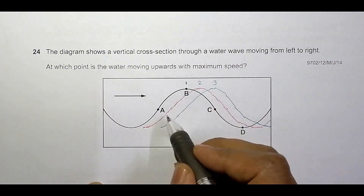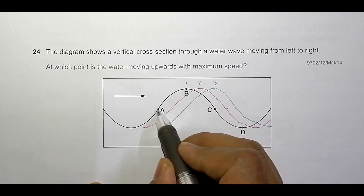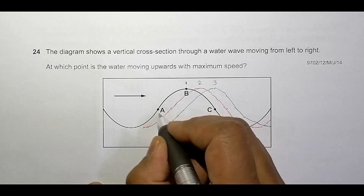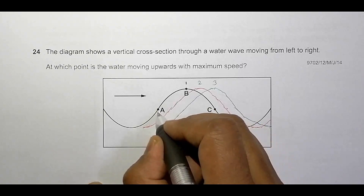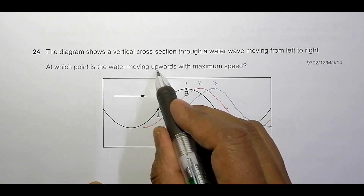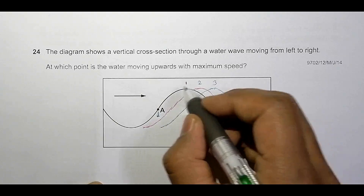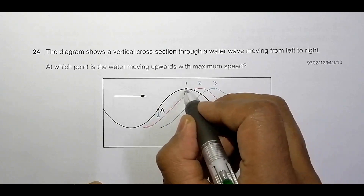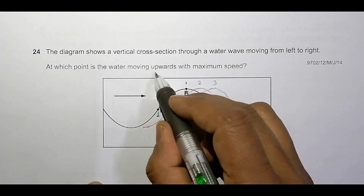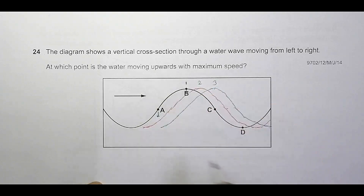So what is happening here is the point A will be going down. Since the wave is like this, point A is going down, so it doesn't belong to any answer. Point B is also going down, so it also does not qualify for the answer.